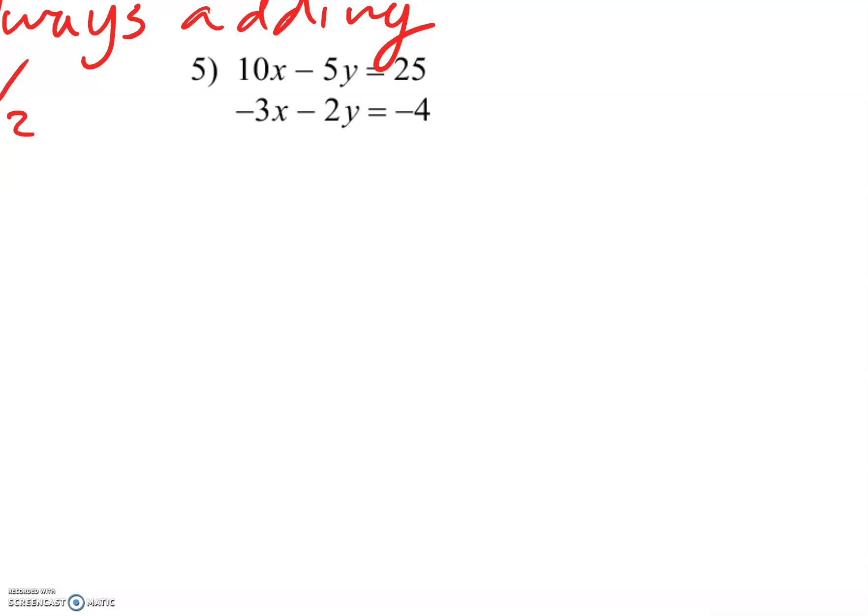The easiest thing to do would be to multiply to get rid of the y's. Actually, they're smaller numbers. Or the 10 and 3 are already opposites, so I can multiply by that. Let's eliminate the x's first. I'm going to multiply by 3 here.